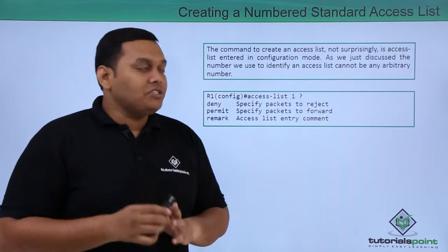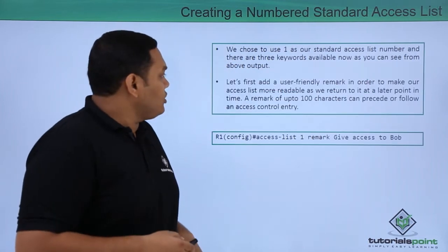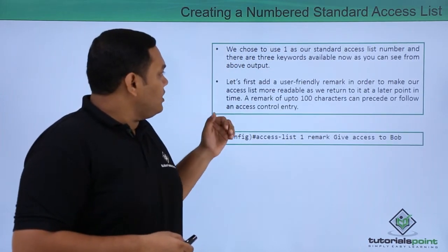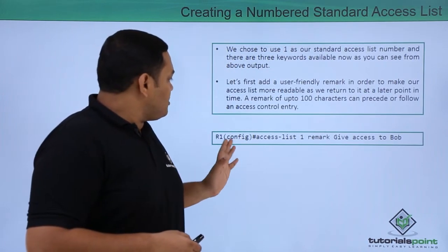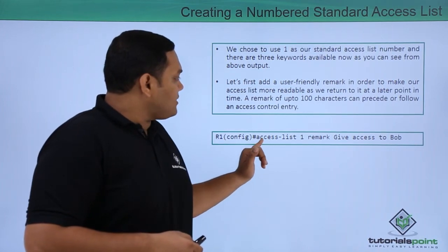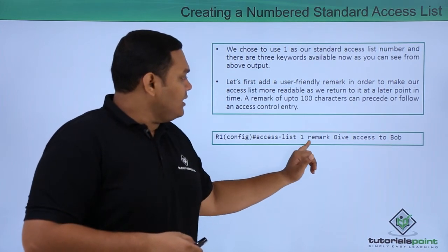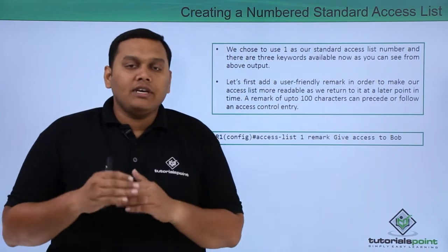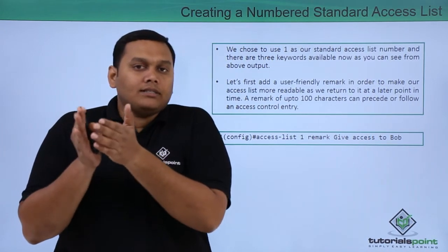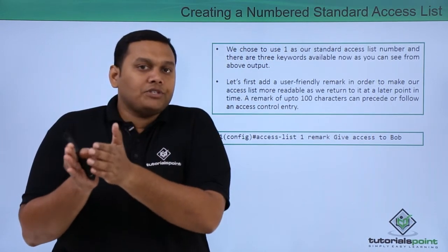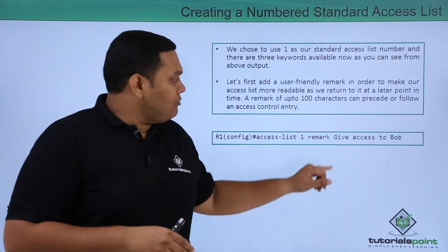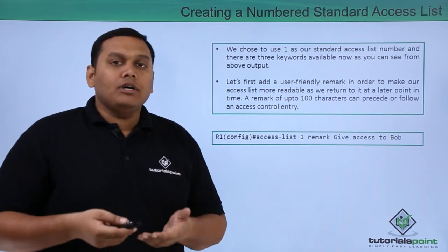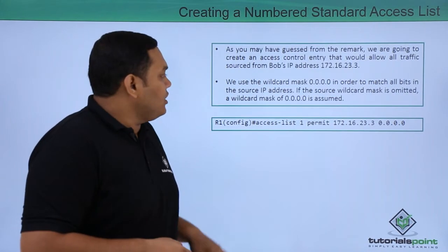We first use the remark option to create a comment for giving access to Bob. In configuration mode: 'access-list 1 remark give access to Bob.' This is an optional comment indicating our intent to give access to Bob.